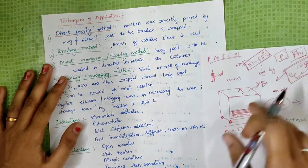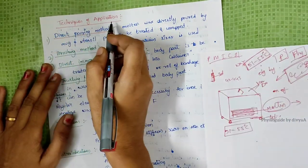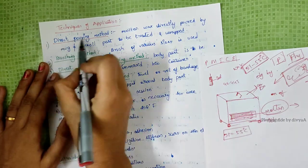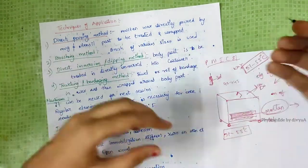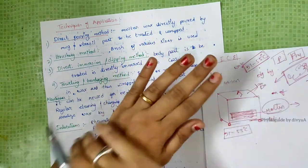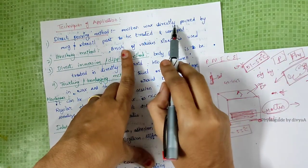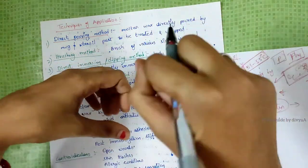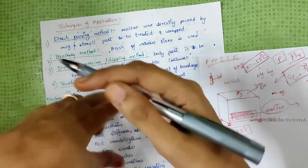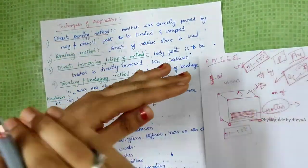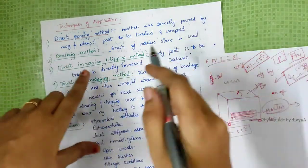Techniques of application: Direct pouring method - directly pour molten wax using a mug or utensil onto the part to be treated and wrap it. Brushing method - apply with a brush.